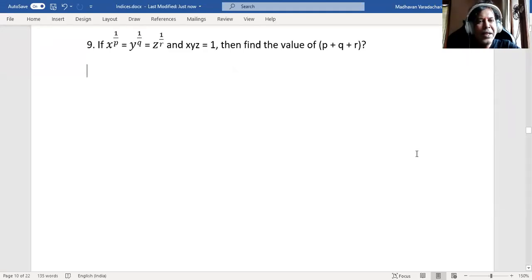Hello, everyone. The next problem in indices, question number 9. If x to the power of 1 by p is equal to y to the power of 1 by q equal to z to the power of 1 by r and x, y, z equal to 1, then find the value of p plus q plus r.